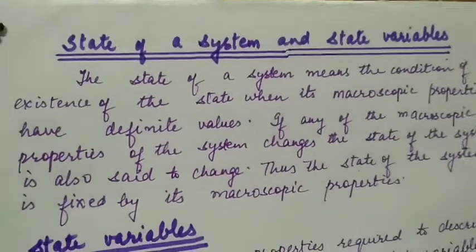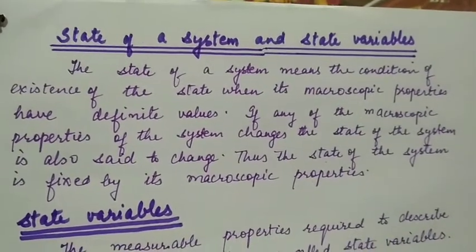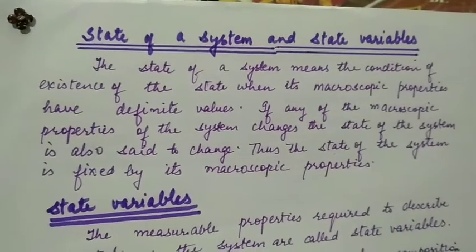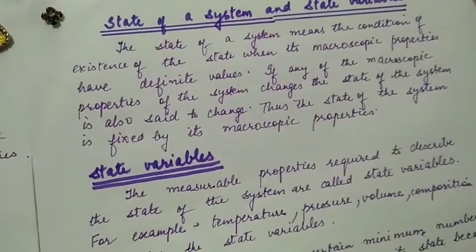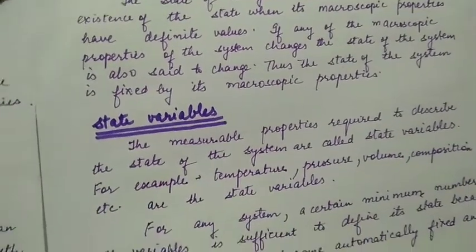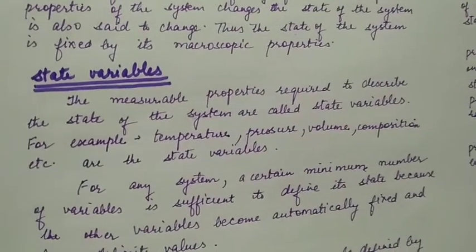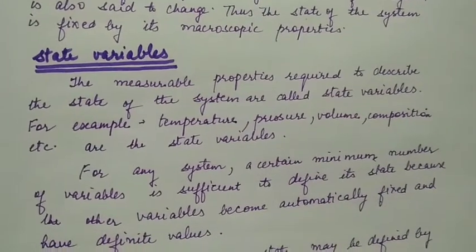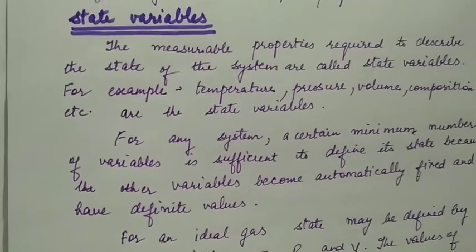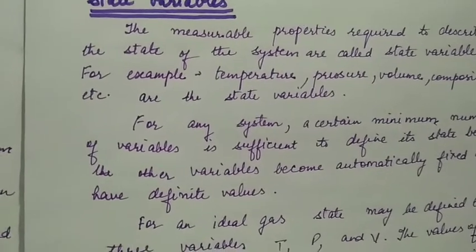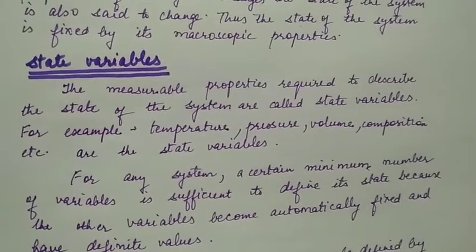Then state of a system and state variables. State of a system means the condition of existence when its macroscopic properties have definite value. State of a system is fixed by its macroscopic properties. State variables - those variables which decide the state - if they are fixed, the state remains fixed, and if they change, the state changes. Those properties are called state variables.